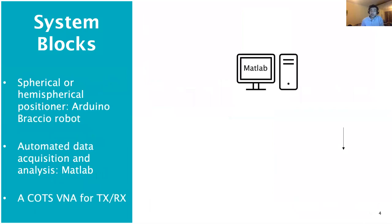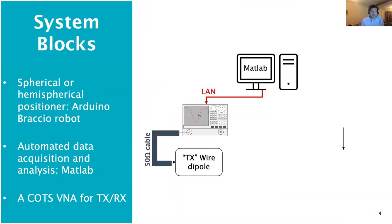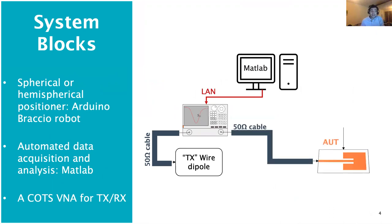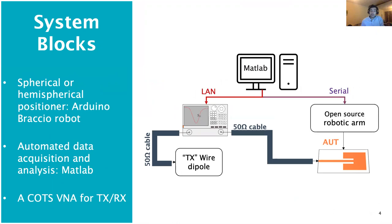The system blocks in our case include a PC running MATLAB at the center. MATLAB controls the VNA via a LAN connection, and that VNA connects to the transmitting antenna. On the other end we have the antenna under test, which is being controlled by an open source robotic arm based on Arduino, communicated via serial. Both are synchronized and automated using the same MATLAB script, enabling us to move the antenna hemispherically from 0 to 180 degrees on both azimuth and elevation. We have used a COTS VNA, which I will discuss more in a moment.